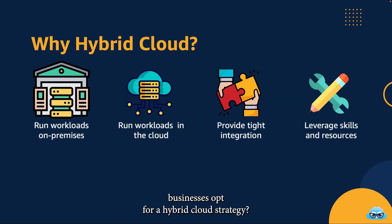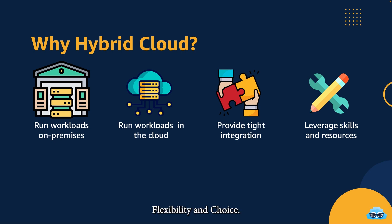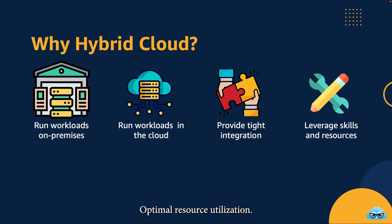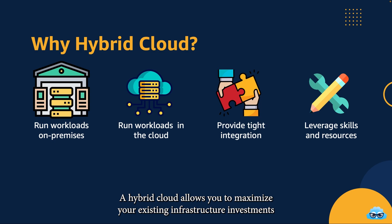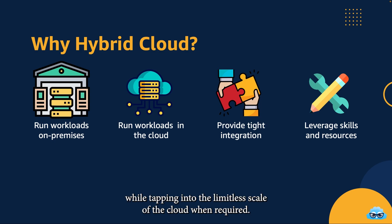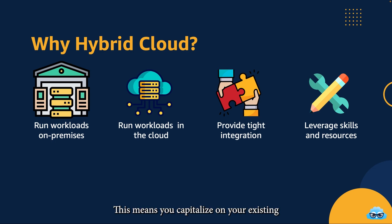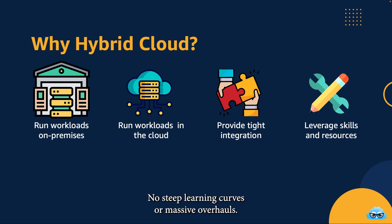Ever wondered why businesses opt for a hybrid cloud strategy? Let's uncover the compelling reasons behind this trend. Flexibility and choice: you have the power to choose where to run your applications based on specific needs. With a hybrid model, you can seamlessly shift workloads between on-premises and the cloud, adapting to fluctuating demands. Optimal resource utilization: a hybrid cloud allows you to maximize your existing infrastructure investments while tapping into the limitless scale of the cloud when required. Unified experience: a genuine hybrid cloud offers a consistent experience across both environments, so you capitalize on your existing skill set, resources, and processes — no steep learning curves or massive overhauls.